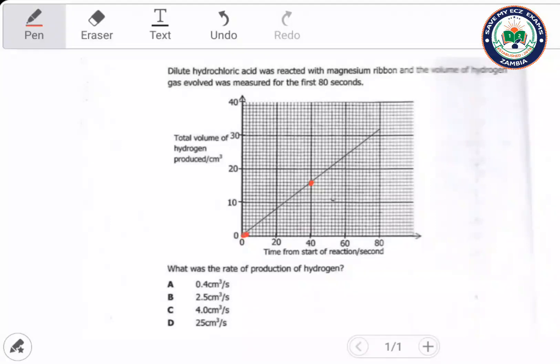So change in time equals 40 minus 0, we get 40. And the change in volume is from here, we have...